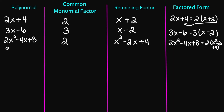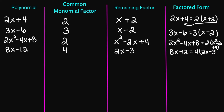Let's try 8x minus 12. My common factor is going to be the number 4. So my remaining factor is going to be 2x minus 3. So my factored form is going to be 8x minus 12, which equals 4 times 2x minus 3.